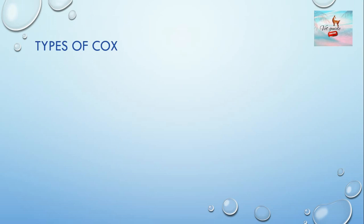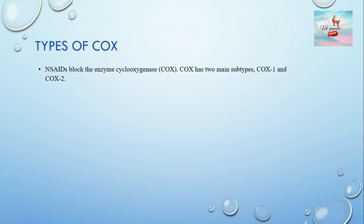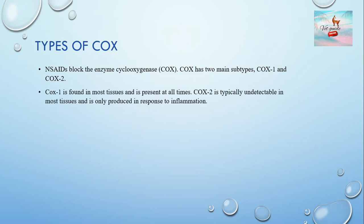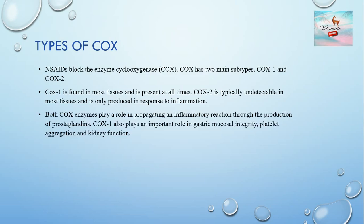NSAIDs block the enzyme cyclooxygenase, which has two main subtypes: cyclooxygenase 1 and cyclooxygenase 2. COX-1 is found in most tissues and is present at all times, while COX-2 is typically undetectable in most tissues and is only produced in response to inflammation. Both play a role in propagating inflammation through prostaglandin production. COX-1 also plays an important role in gastric mucosal integrity, platelet aggregation, and kidney function.